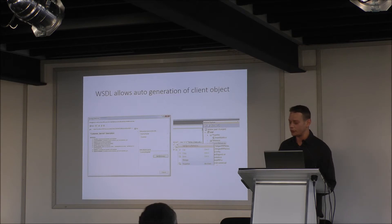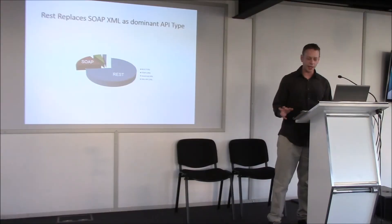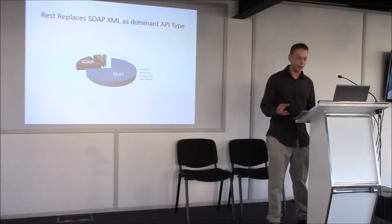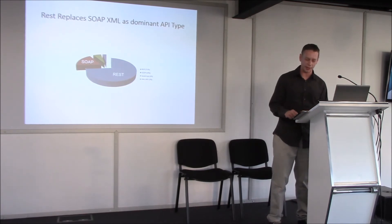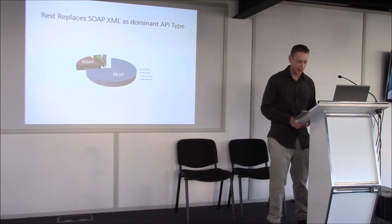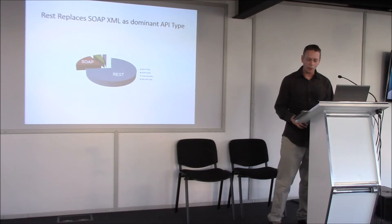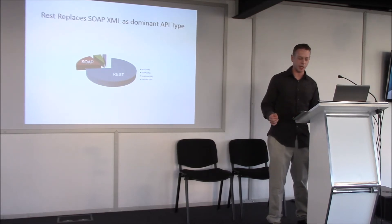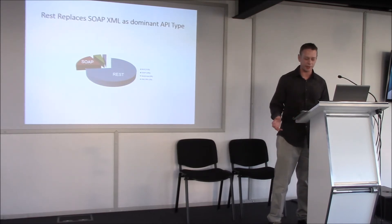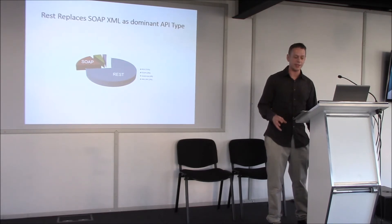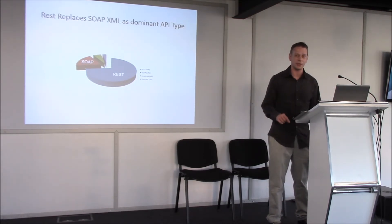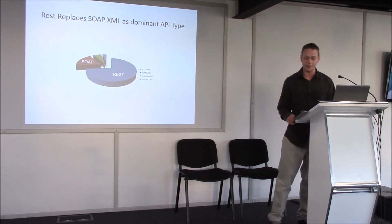Over time, JSON REST APIs have generally replaced SOAP APIs as the dominant API type during the last five years. One reason people cite is they're lightweight and use less bandwidth, so they can be faster. I would however argue that the main reason is they're simpler to learn and use.